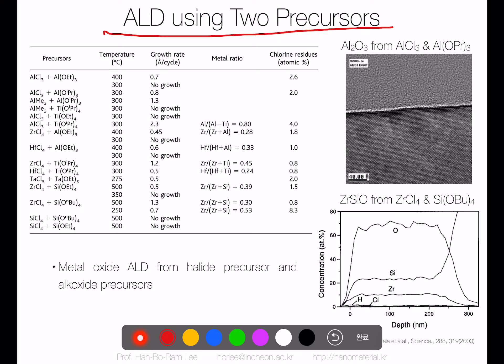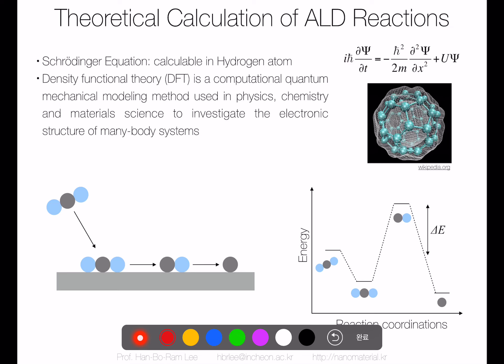Typically we use one precursor and one counter reactant — hydrogen, oxygen, or ammonia as simple gases. But some groups use two different precursors without a separate counter reactant, where one precursor acts as the counter reactant for the other. For example, a halide precursor and an alkoxide precursor are used together to deposit aluminum oxide, or halide and alkoxide combinations to deposit silicate films.